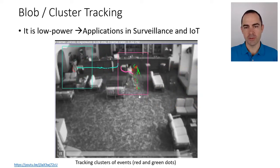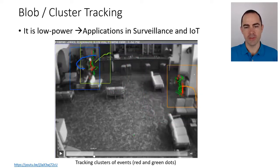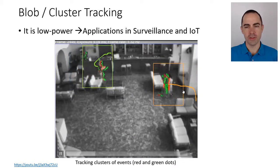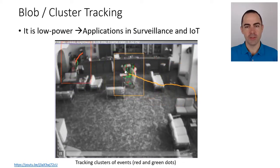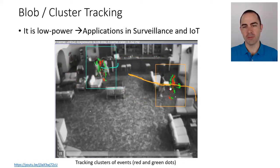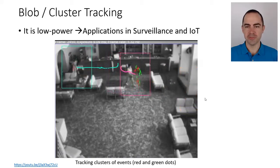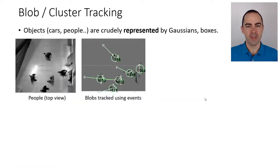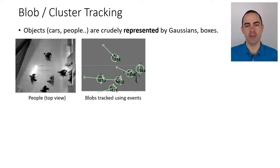Sometimes it doesn't work so well. There was a change of direction — a cluster came left, then there was a crossing, and then the cluster continued, but it was a different object. This blob or cluster tracking simply considers that events form a blob or cloud of points that we want to follow.